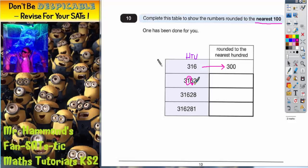If this number is 5 or more then I'm going to round up, but if it's less than 5 I'm going to stay the same. In this example it's 6 which means I'm going to round up, so it's going to be 3200.